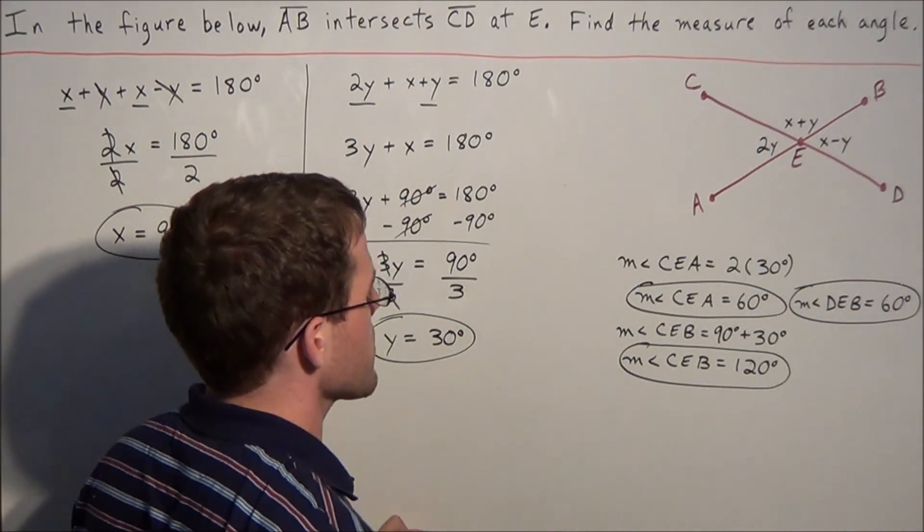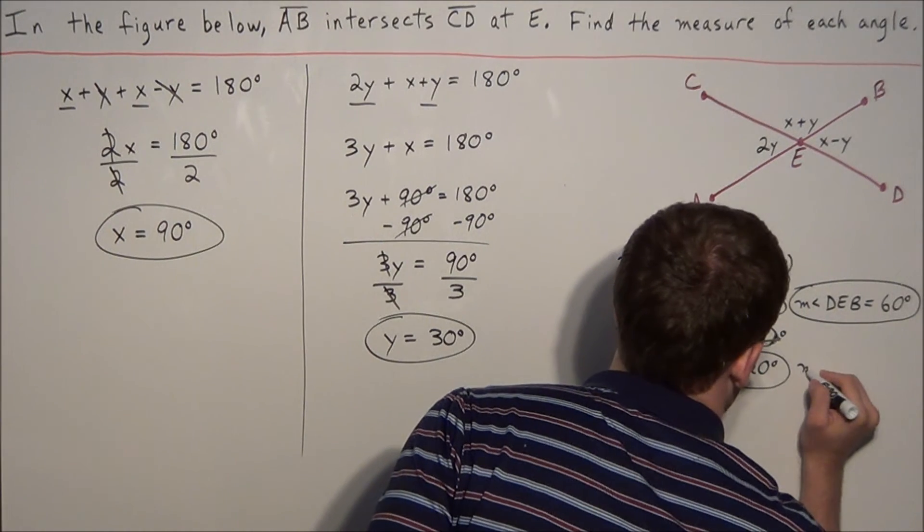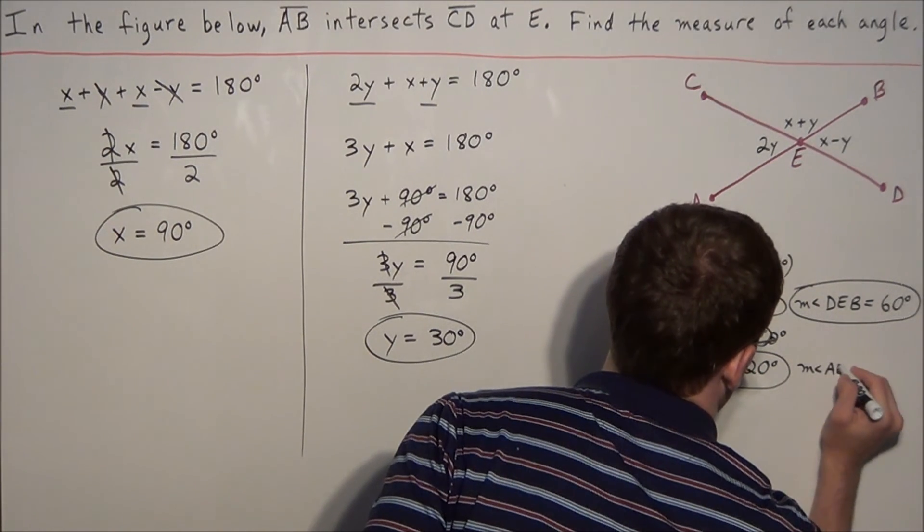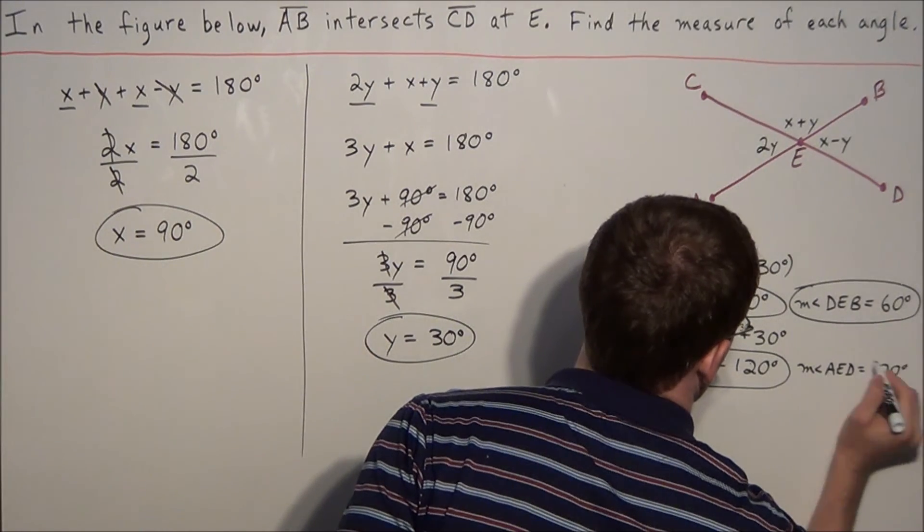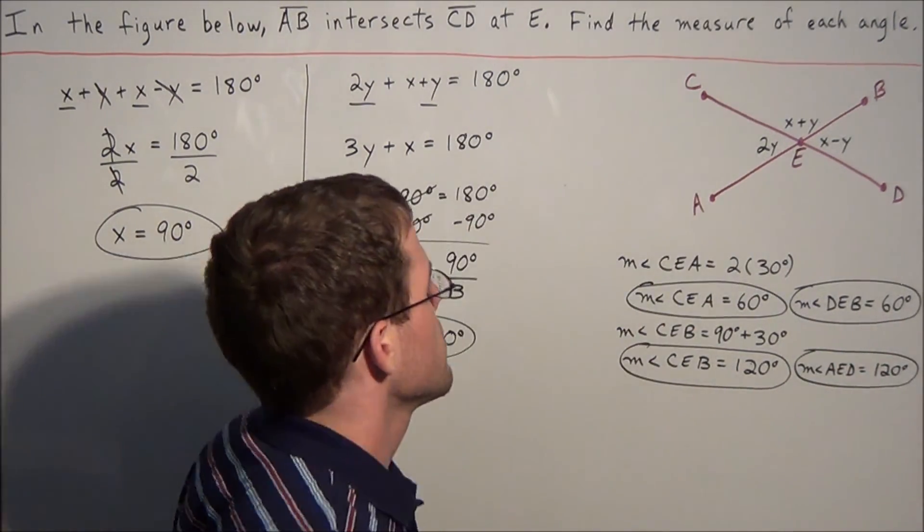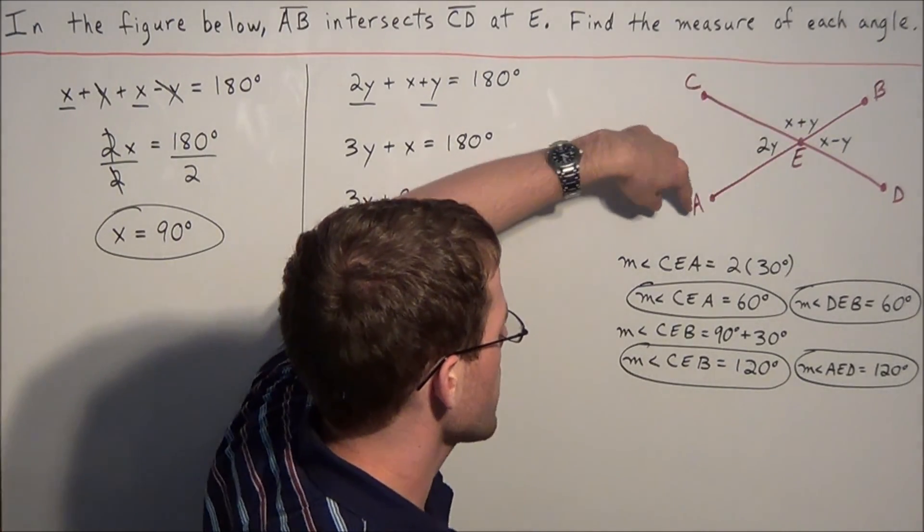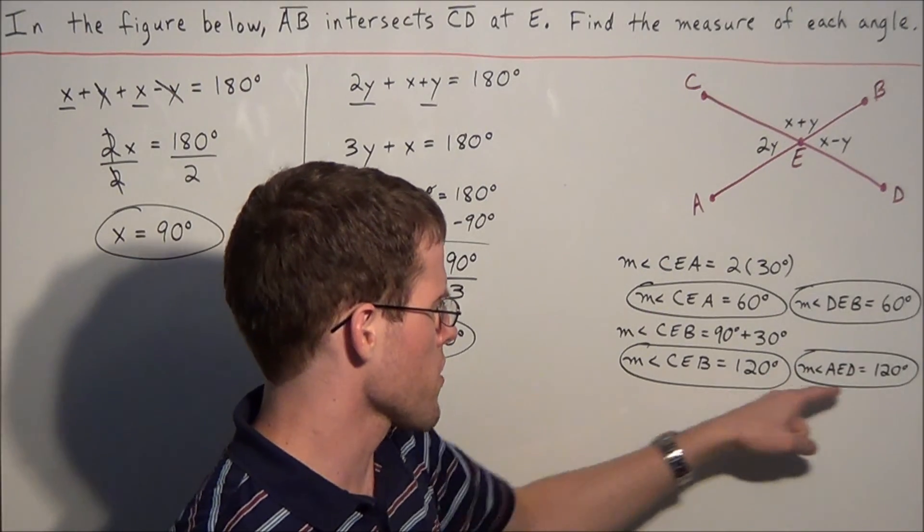By the same reasoning, the measure of angle AED is equal to 120 degrees, because angles CEB and AED are also vertical angles, therefore their measures are equal.